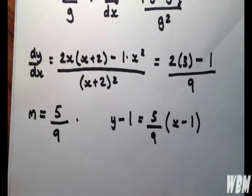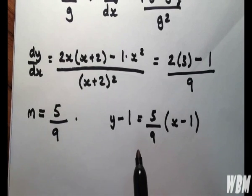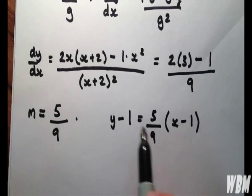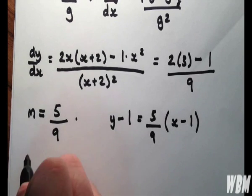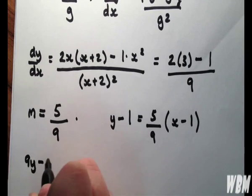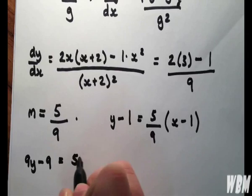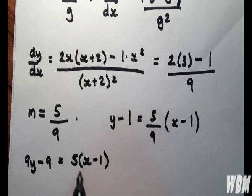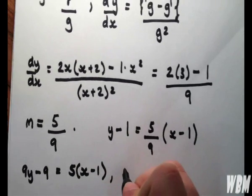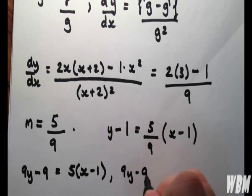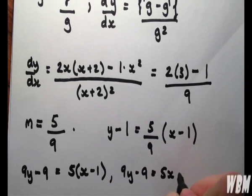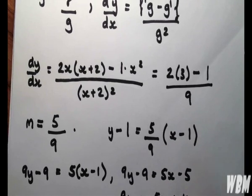Now, this would be an adequate answer, but we can simplify it a little bit further by multiplying throughout by 9. And now expand the brackets. And put the 9 on this side. Minus 5 plus 9 is of course 4.